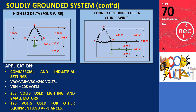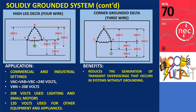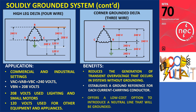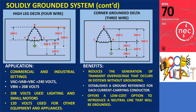Corner grounded delta is one of the earliest forms of grounded systems in electrical installations, offering a low-cost method of grounding a delta configuration. The grounding could be on any of the three phases from the transformer secondary, but the choice is usually the second or B phase for easy tracking. Benefits include reducing transient overvoltage, establishing a ground reference for each current-carrying conductor, and offering a low-cost option to introduce a grounded neutral line.